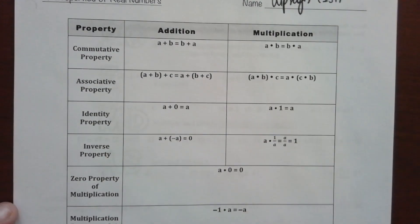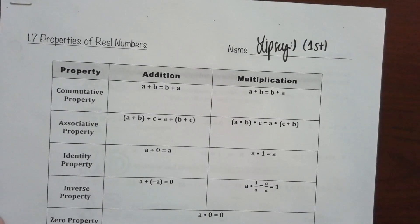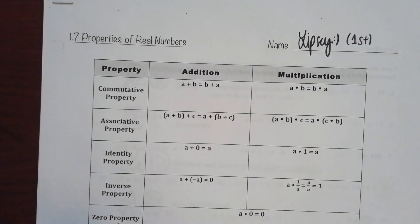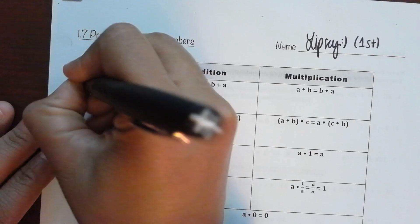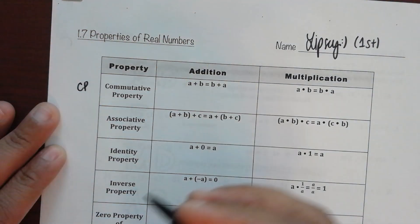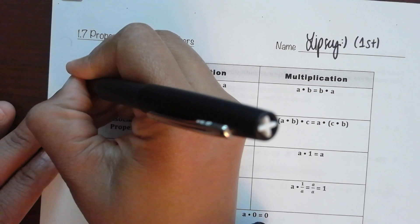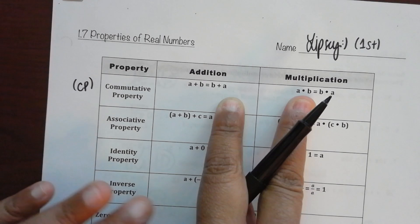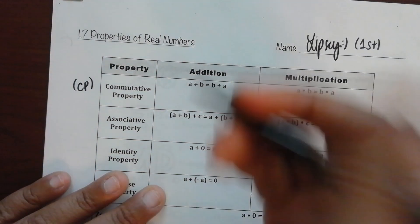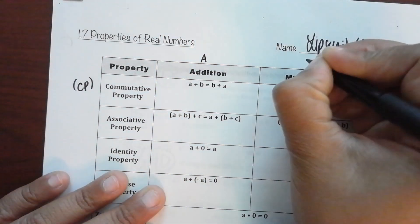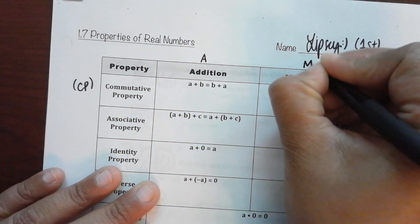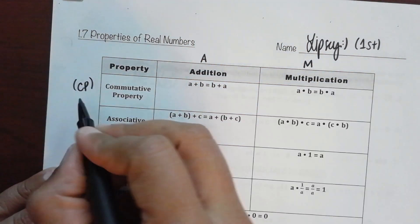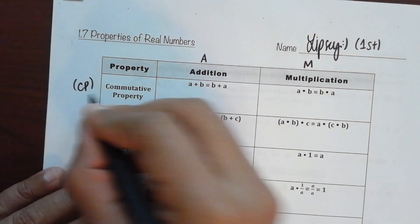The very first property we're talking about is the commutative property — we call it CP for short. There are two different ways the commutative property can work: with addition and multiplication. Addition is simplified as A and multiplication as M, so CPA means commutative property of addition, and CPM means commutative property of multiplication.